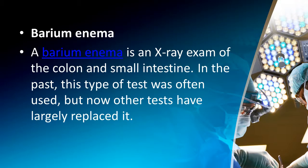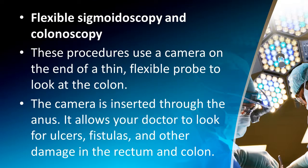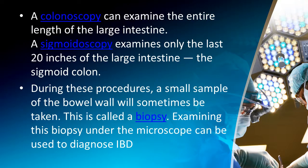A barium enema is an X-ray exam of the colon and small intestine; in the past this was often used, but other tests have largely replaced it. Flexible sigmoidoscopy and colonoscopy use a camera at the end of a thin, flexible probe inserted through the anus to look for ulcers, fistulas, and other damage in the rectum and colon. A colonoscopy examines the entire large intestine, while a sigmoidoscopy examines only the last 20 inches. During these procedures, a small biopsy of the bowel wall may be taken and examined under a microscope to diagnose IBD.